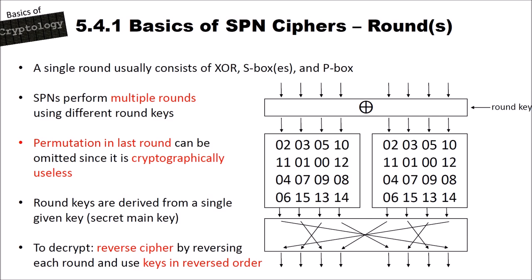The simplest key schedule takes the first 8 bits as round key 1, the next 8 as round key 2, and so on. To decrypt using an SPN cipher, you reverse the cipher by reversing each round and using the keys in reversed order: input the ciphertext, reverse the permutation, use inverse S-boxes, apply the last round key, and repeat for each round to recover the plaintext.